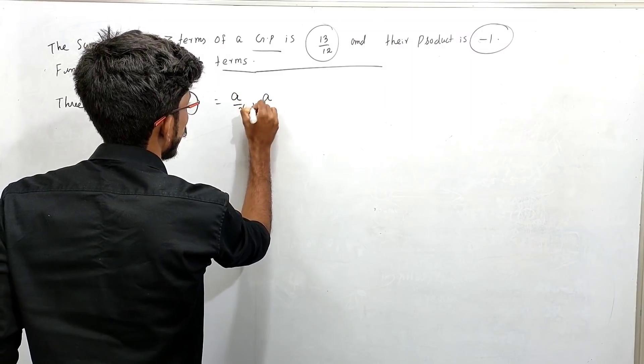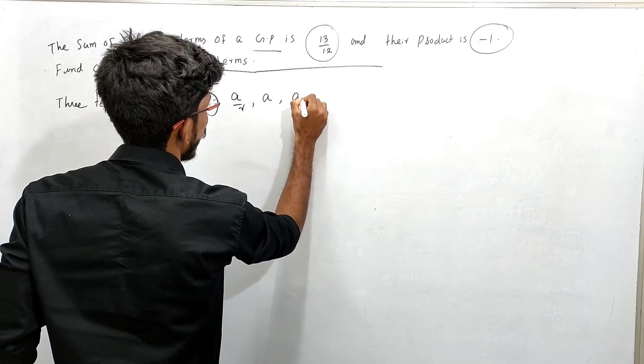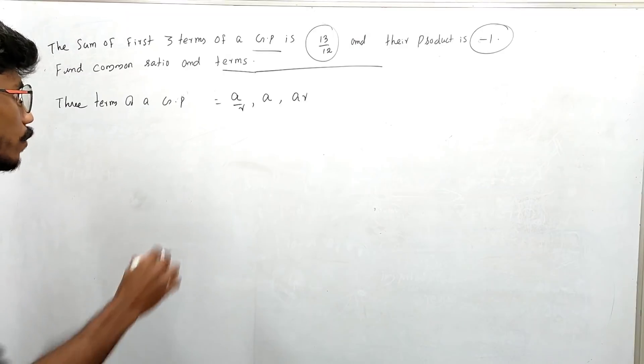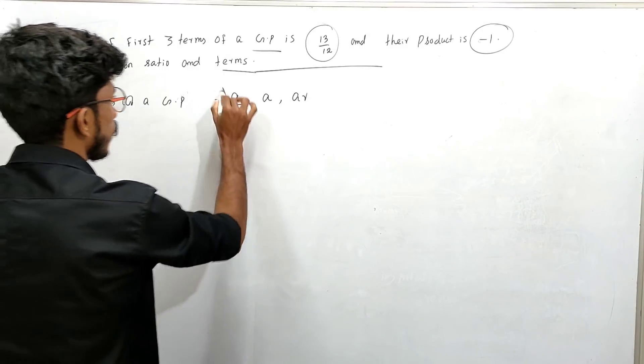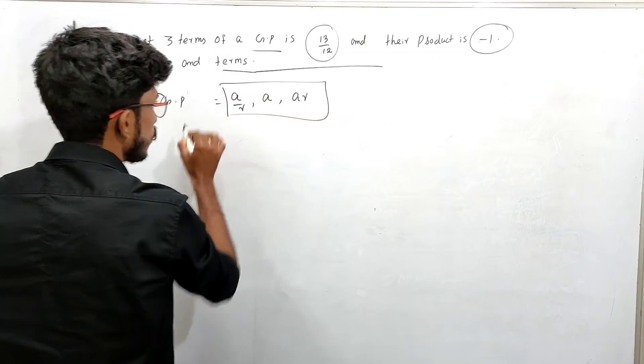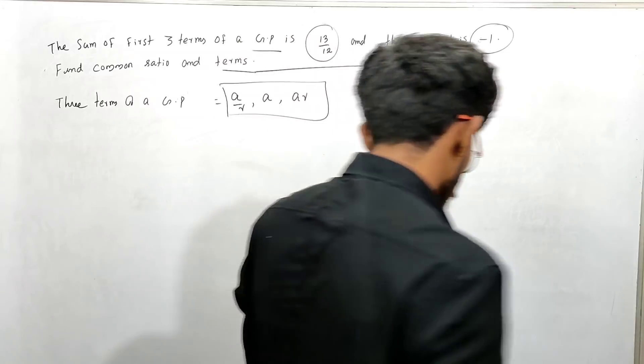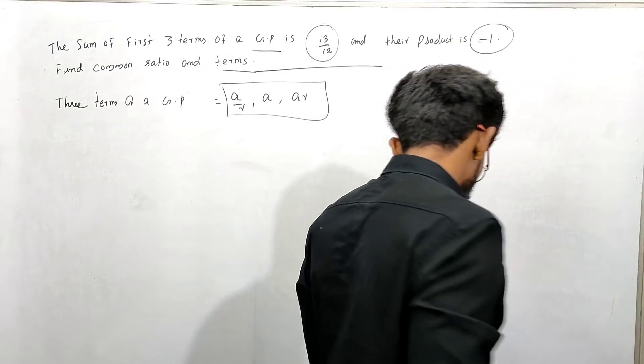In a geometric progression, the 3 terms are written as A/R, A, and AR. This is the standard form for three terms of a GP, so that the middle term is A, the first is A/R, and the third is AR.